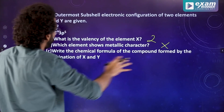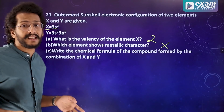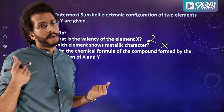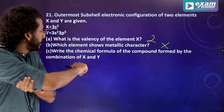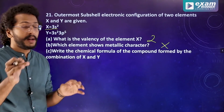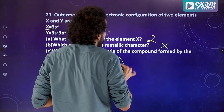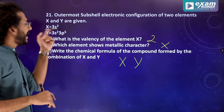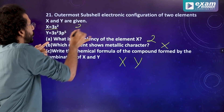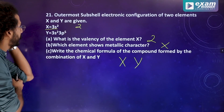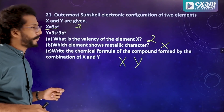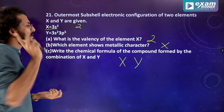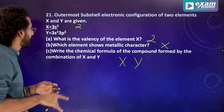We need to write the chemical formula of the compound formed by the combination of X and Y. X has valency 2 and Y has valency 1. The 3p6 configuration is stable.